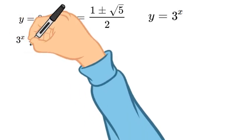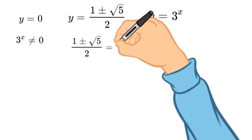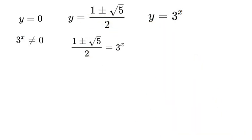So 3 to the power of x cannot equal 0. Therefore, 0 cannot be the answer. No power of 3 could make it 0. So now if we put 3 to the power of x is equal to 1 plus or minus square root of 5 over 2,